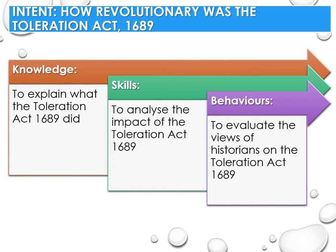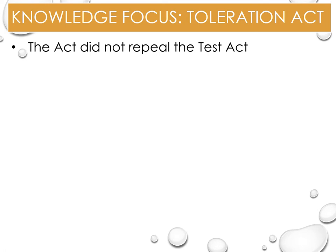The Act of Toleration did not cover Catholics, non-Trinitarians, and Jews. Therefore, non-Anglicans were not able to sit in Parliament or hold public office. If they did not swear allegiance to the Anglican Church, they could not attend university, work in the legal profession, or practise medicine.